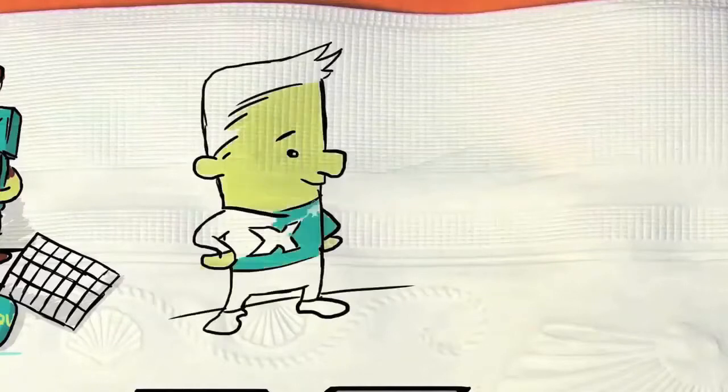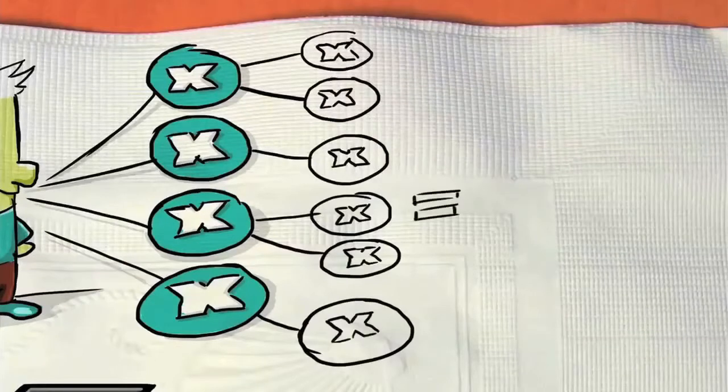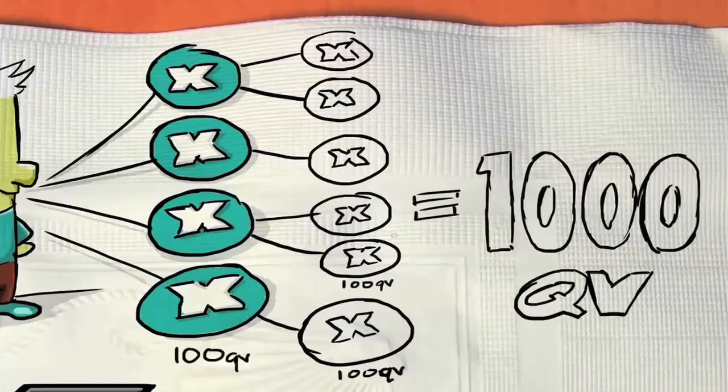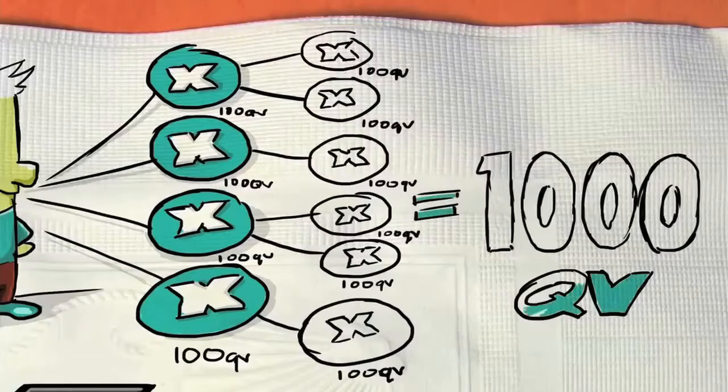Second, maintain at least four active, personally enrolled members, or PEMs. Third, have at least 1,000 QV in your first two levels. But remember, only up to 100 QV per person will be counted towards your X-Drive qualification.